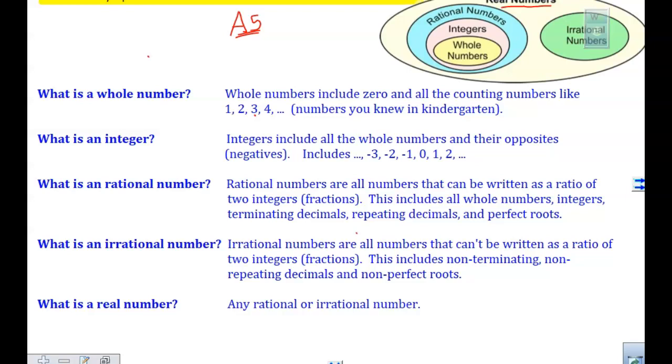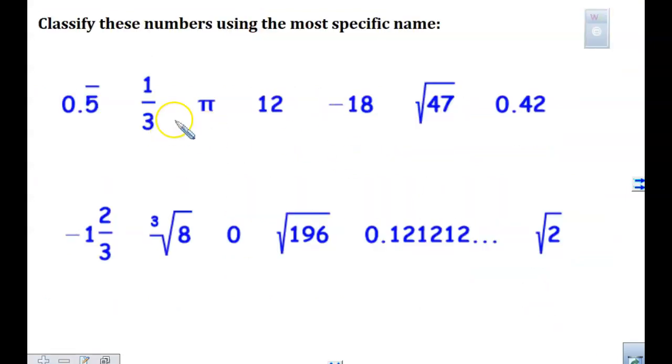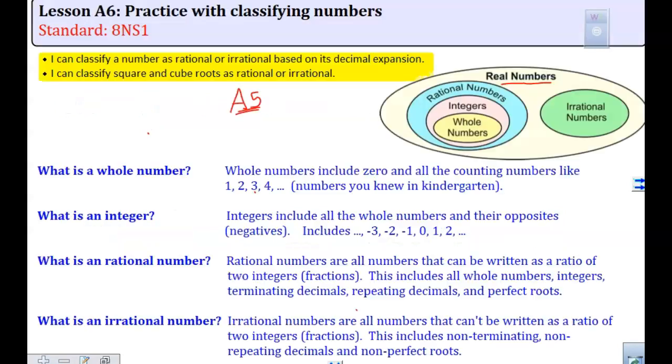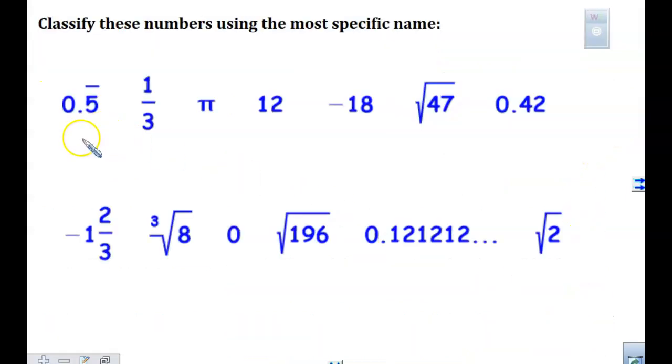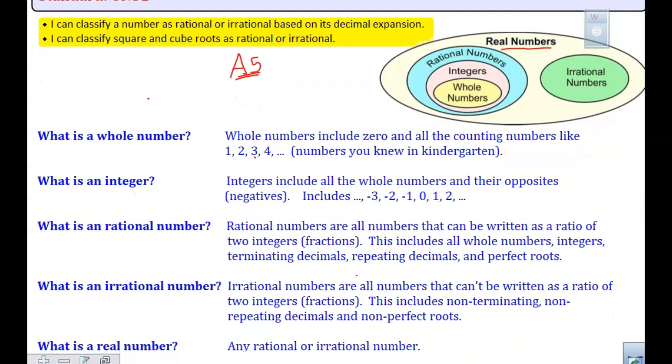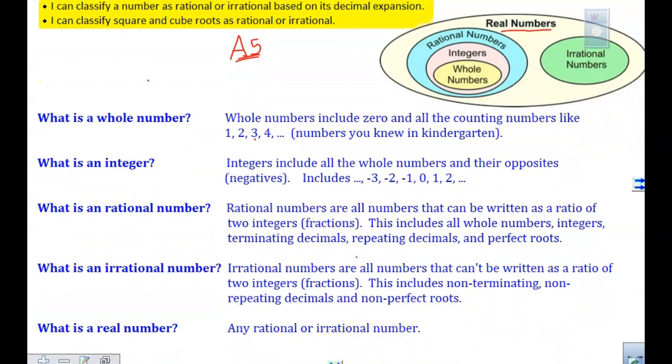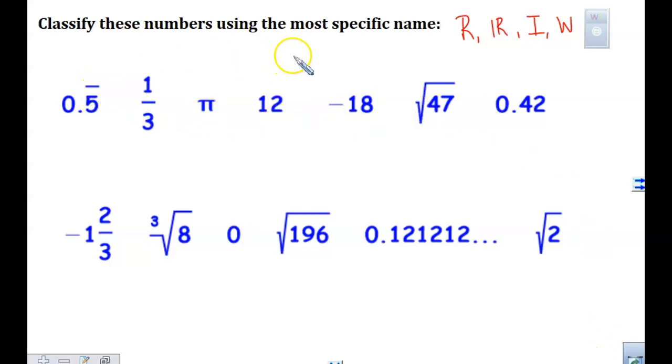What you are going to be asked to do, our lesson today is really short, classify the numbers using the specific name. So what do I mean by the specific name? I mean whole numbers, integers, rational, and irrational. Using those names, write below each of these. Maybe you're going to tell me an R for rational, maybe IR for irrational, maybe an I for integer, maybe a W for whole number. We want the most specific name.